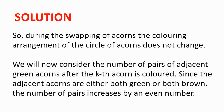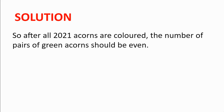We will now consider the number of pairs of adjacent green acorns after the kth acorn is coloured. Since the adjacent acorns are either both green or both brown, the number of pairs increases by an even number. If the two adjacent acorns are both brown, the number of pairs increases by zero, which is even. And if the adjacent acorns are both green, the number of pairs increases by two. The kth acorn is paired with the two adjacent acorns. So after all 2021 acorns are coloured green, the number of pairs of green acorns should be even, as after each acorn is coloured green, the number of pairs increases by an even number.